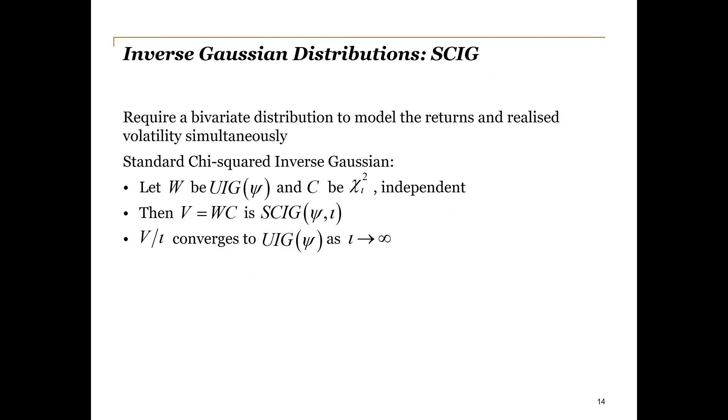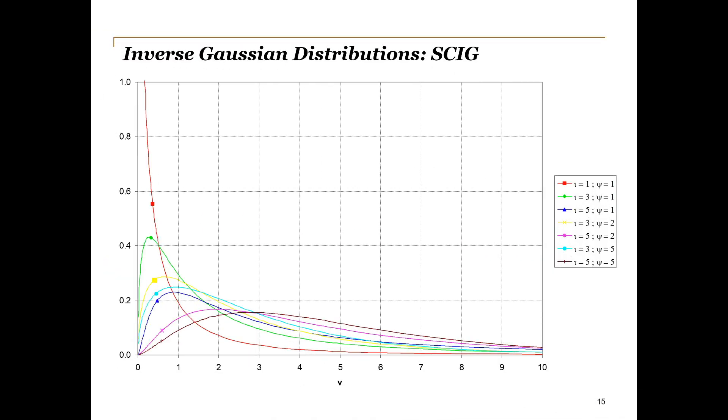With W being UIG as before, introduce a new chi-squared variable C. The distribution of V equal to W times C is then what we call the standard chi-squared inverse Gaussian distribution. This graph shows how the parameters affect the shape of the distribution, changing the weight in the tails and the peaks. Note how, like volatility, V can only be positive.